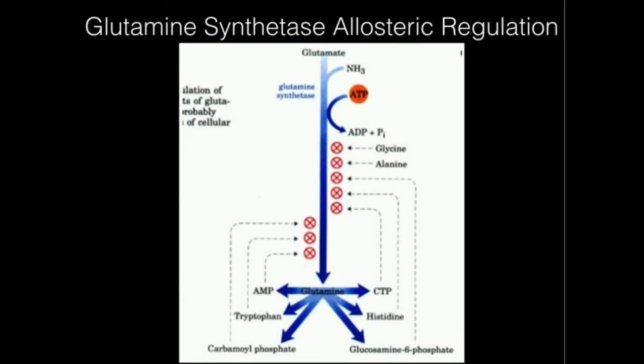Glutamate is converted to glutamine, as we've said in multiple videos. Glutamine can be used, depending on the organism, to make six main molecules: adenosine monophosphate, tryptophan, carbamoyl phosphate, glucosamine 6-phosphate, histidine, and CTP — cytidine triphosphate. It turns out those six molecules can allosterically inhibit glutamine synthetase, denoted by these X's right here.